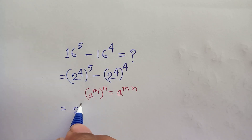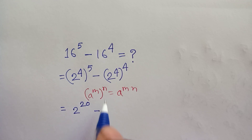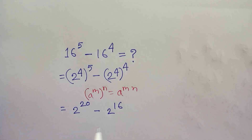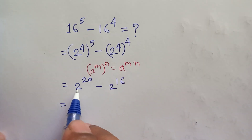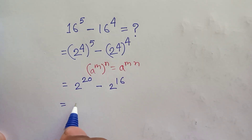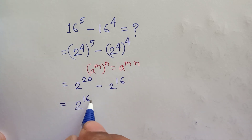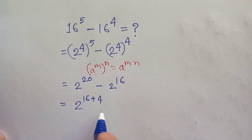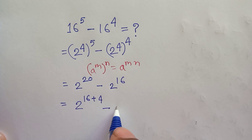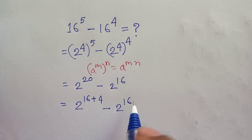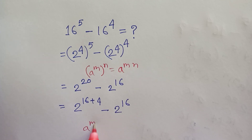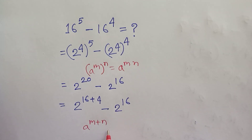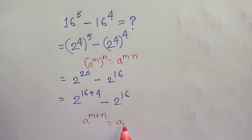Applying the formula, we get 2^(4×5) = 2^20 minus 2^(4×4) = 2^16. Now 2^20 can be rewritten as 2^(16+4) minus 2^16.